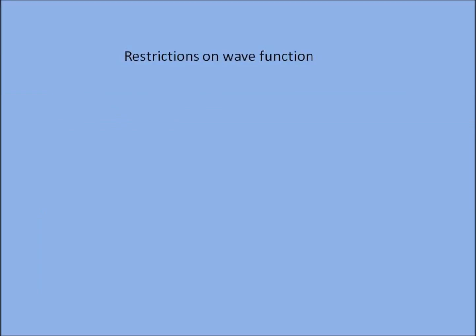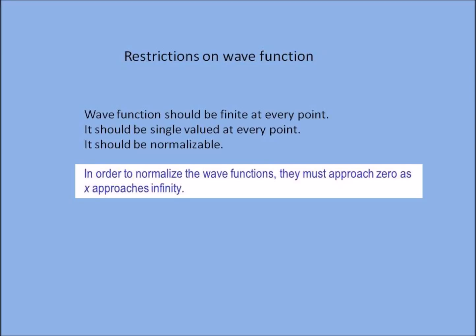Now we will see what are the restrictions on the wave function. First one is it should be finite at every point. It should be single valued at every point. It should be normalizable, we will see what is normalization in next videos.